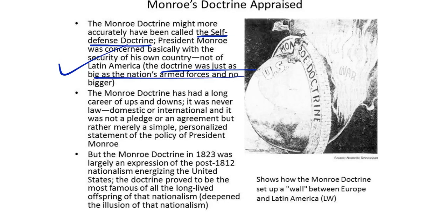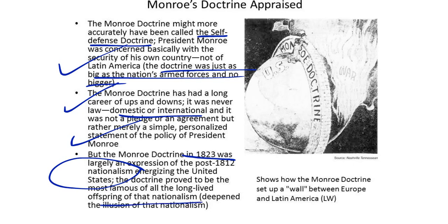The Monroe Doctrine might have more accurately been called the self-defense doctrine. President Monroe was concerned basically with the security of his own country, not of the countries in Latin America. The doctrine was just as big as the nation's armed forces and no bigger. It was never law, domestic or international, but merely a simple, personalized statement of the policy of President Monroe. The Monroe Doctrine in 1823 was largely an expression of the post-1812 nationalism energizing the United States, and it proved to be the most famous offspring of that nationalism, deepening the illusion of nationalism in the United States. We'll discuss the Monroe Doctrine and its impact on the United States, Latin America, and Europe in more detail in class.